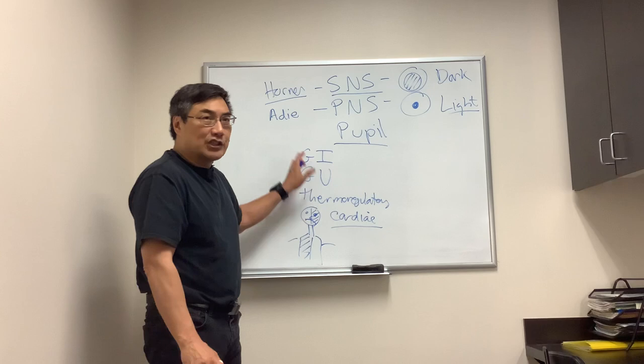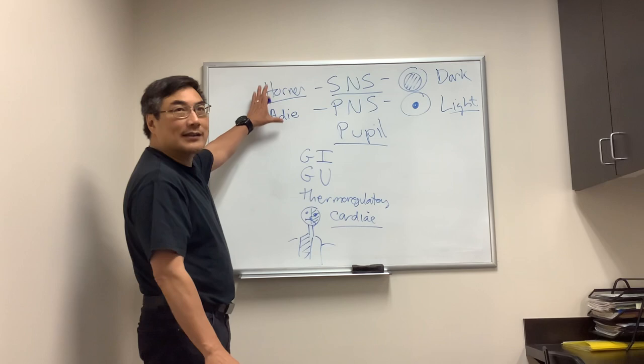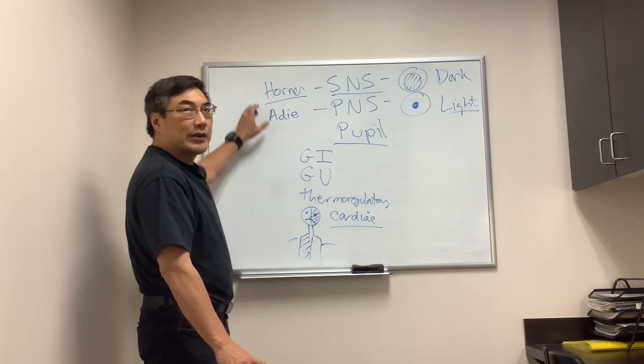Every patient who has an anisocoria, make sure it's isolated and idiopathic. Image the Horner syndrome. You don't have to image the Adie's tonic pupil. You do have to think about syphilis serology in all these people, because syphilis is the great mimic, and then make sure it's not the Harlequin or the ROS.